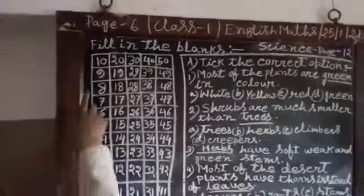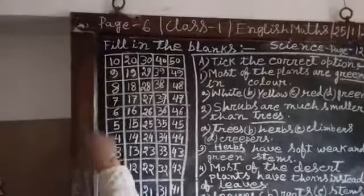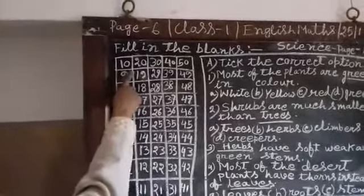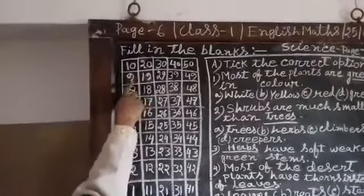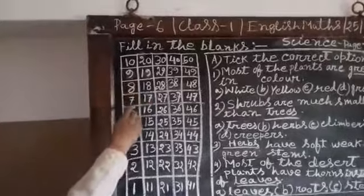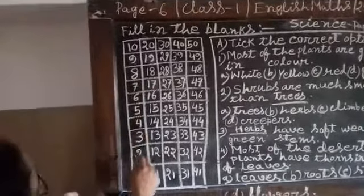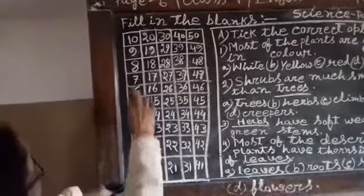We are going to count down. 10, 8, 7, 6, 5, 4, 3, 2, 1.